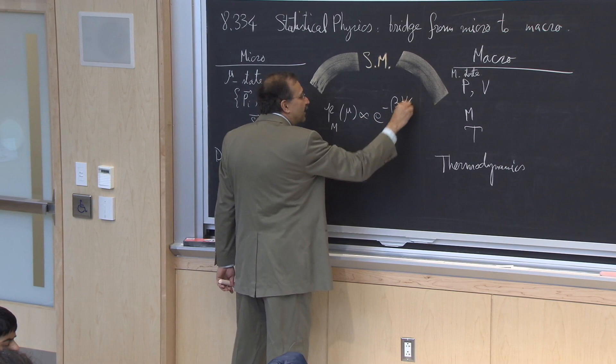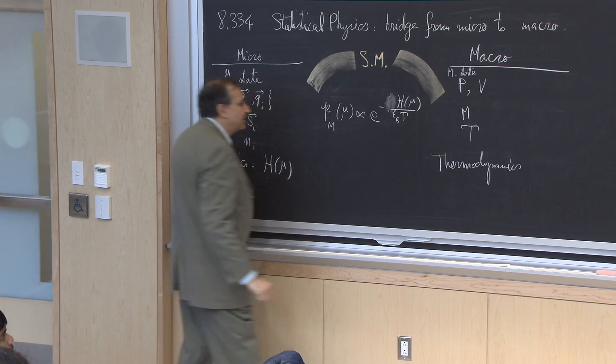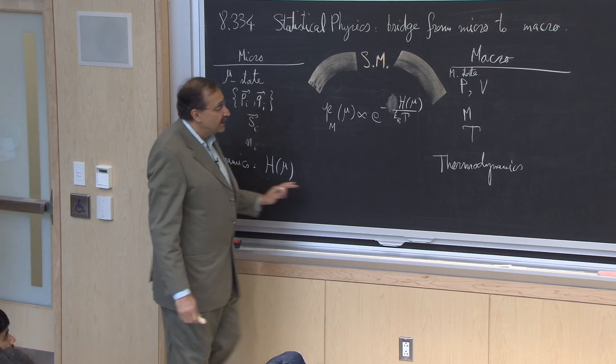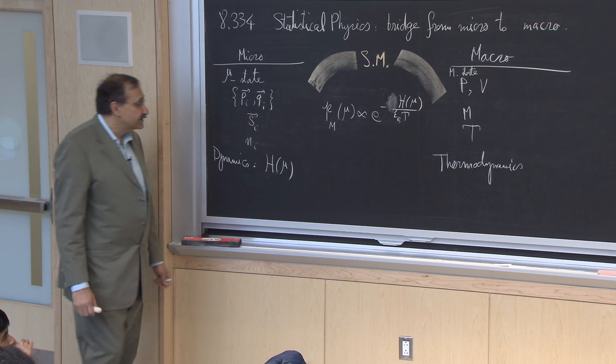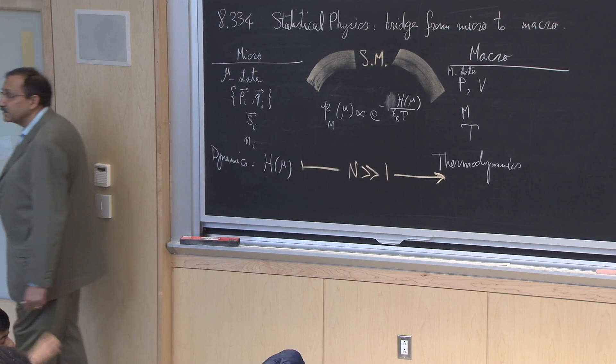For example, in the canonical ensemble where you know you are at a particular temperature, this probability has the form e to the minus beta times the Hamiltonian, where beta is 1 over kT. The thing that enabled us to connect this deterministic perspective with the equilibrium description via probabilities was relying on the limit where the number of degrees of freedom was very large, enabling very precise statements.